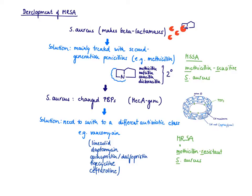In this video I want to talk about the development of MRSA, methicillin-resistant Staph aureus. Staph aureus is a gram-positive cocci that you find predominantly on the skin.